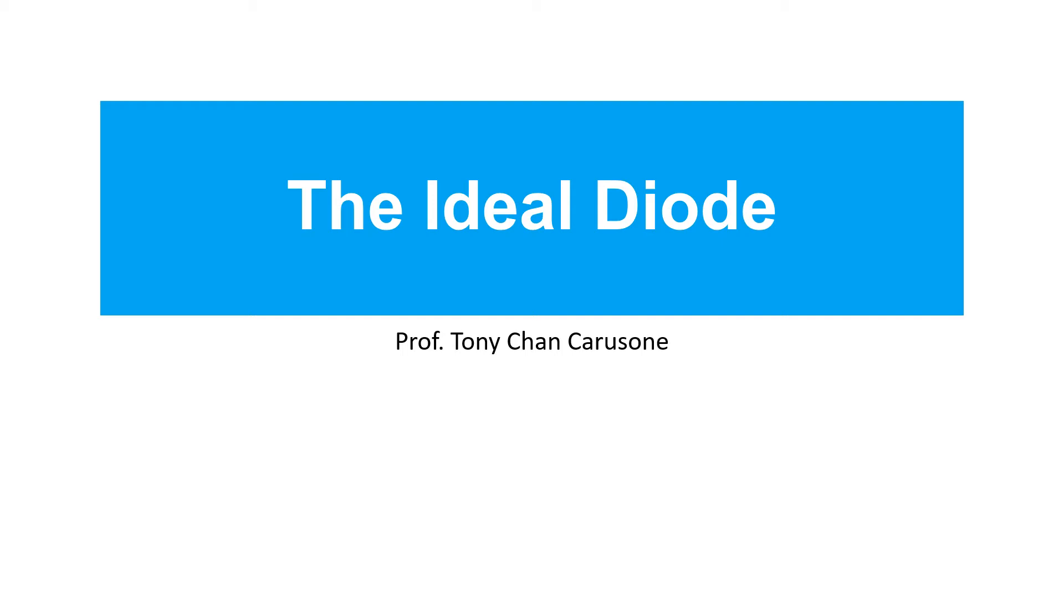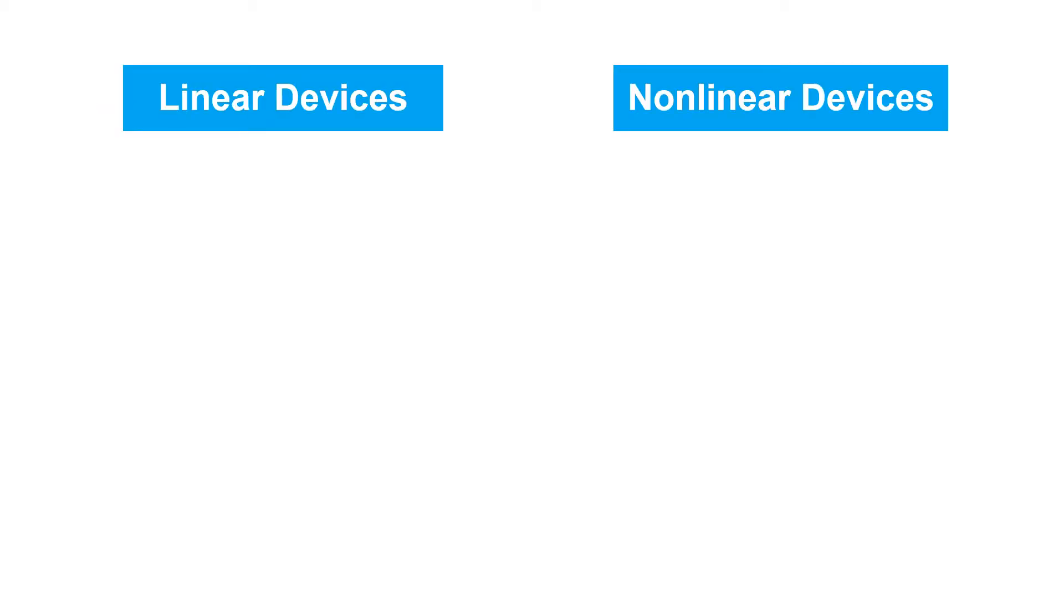In this video, we'll learn about the ideal diode and its modeling. So far, our study of electronics has focused on linear devices, such as resistors and capacitors, and other passive components.